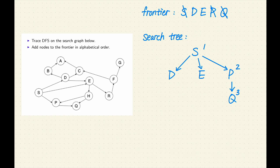The most recent node added to the frontier was E. E is the fourth node expanded. Remove E from the frontier. E is not a goal. Let's expand E. E has two successors, H and R. Add them to the frontier in alphabetical order and add them to the search tree.